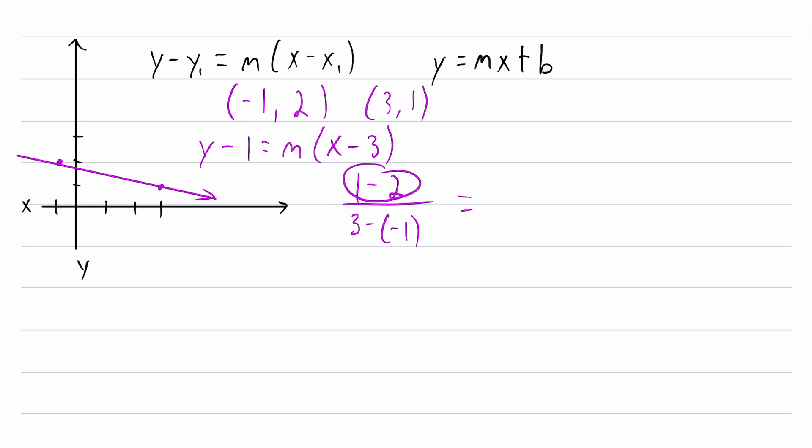And what is this equal to? Well, 1 minus 2 is negative 1, that's in the numerator, and then in the denominator, 3 minus negative 1 is 3 plus 1, which is 4. So m, the slope of this line, is equal to negative 1/4.